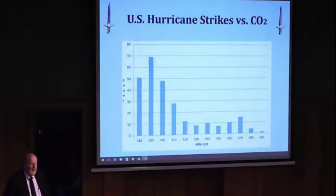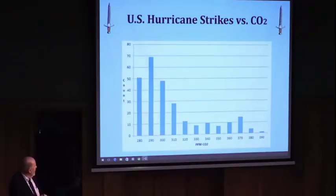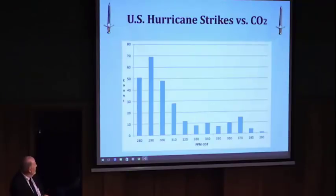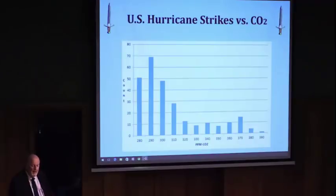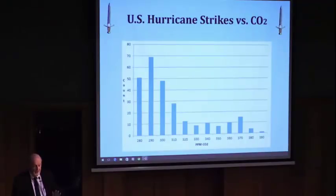Here we have hurricane strikes in the US versus CO2. This is hard data. This is 280 parts per million, this is 400. And CO2 is rising like this. How about hurricanes? You can figure this one out. By the way, correlation is not causation, and inverse correlation is not causation. So don't read into this that we need more CO2.